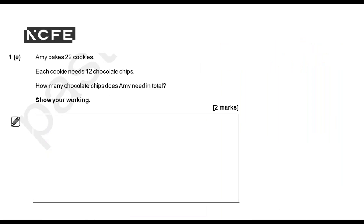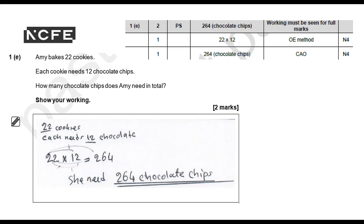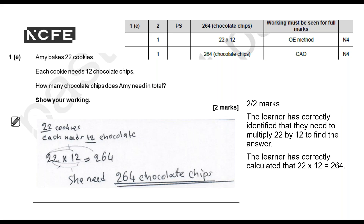Question 1E: Ameat bakes 22 cookies and each cookie needs 12 chocolate chips. How many chocolate chips does Ameat need in total? Show your working. The learner gets 2 out of 2 marks. They correctly identified they need to multiply 22 by 12 to find the answer, and they correctly calculated that 22 times 12 is 264. So 2 marks out of the possible 2.